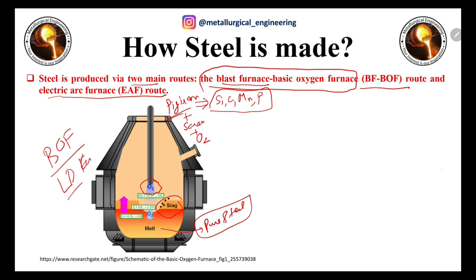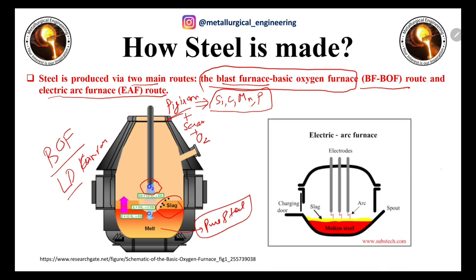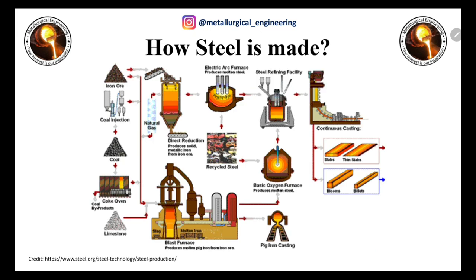This furnace is also known as the LD converter. The second route is the electric arc furnace (EAF) route. In the EAF, sponge iron produced from DRI-based processes is used, and 100% scrap can also be used to produce molten steel.